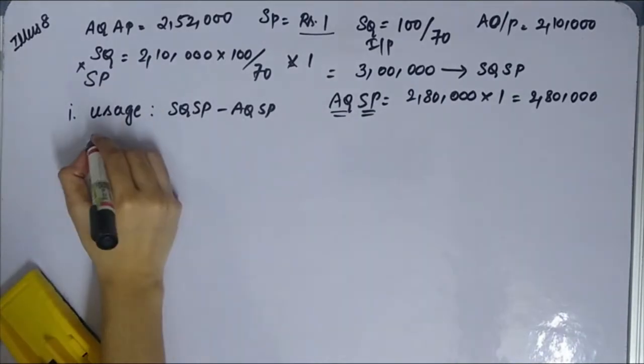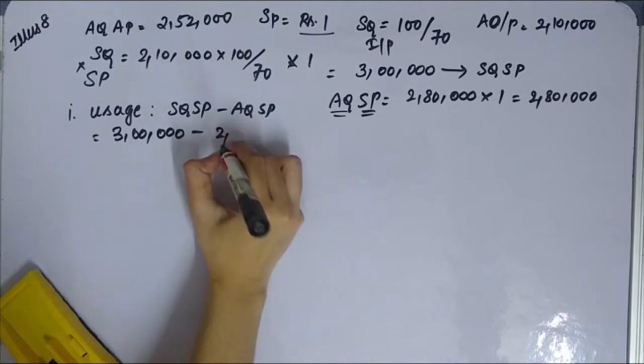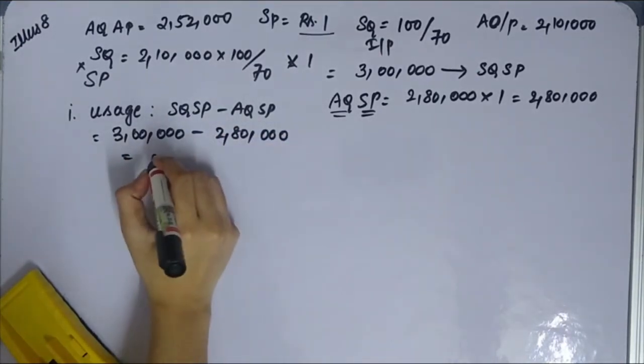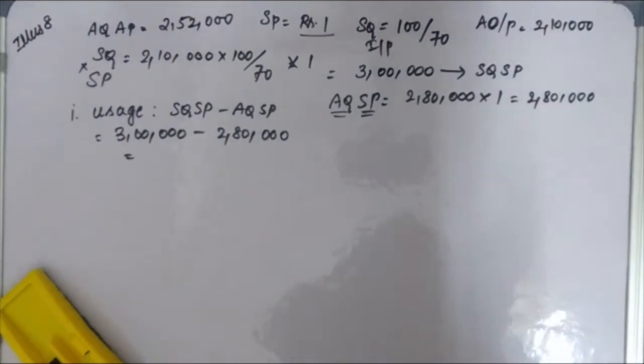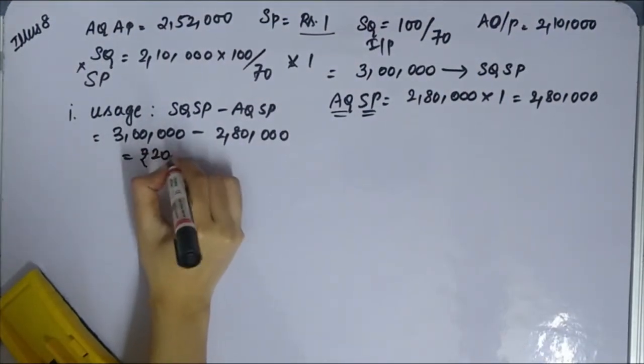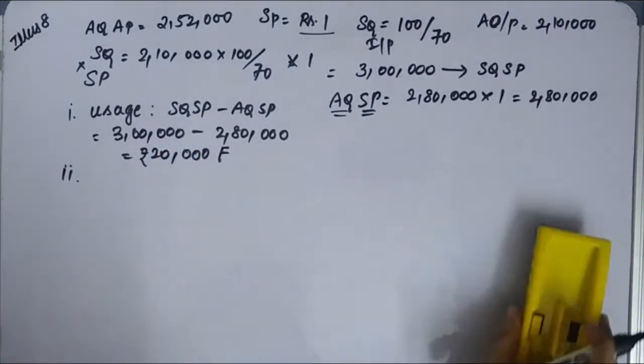So usage variance: 3,00,000 minus 2,80,000 equals 20,000, which will be favorable.